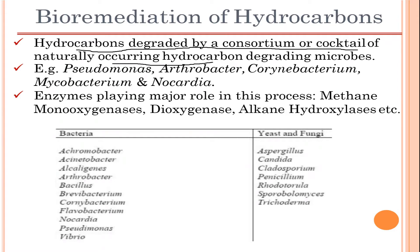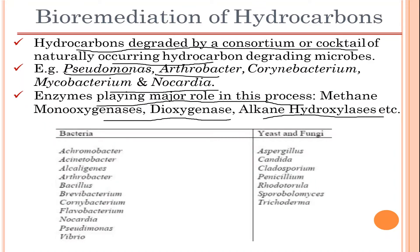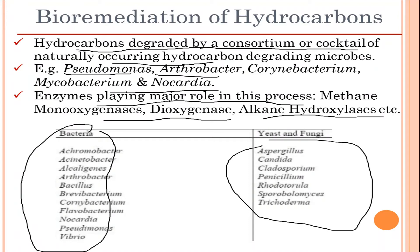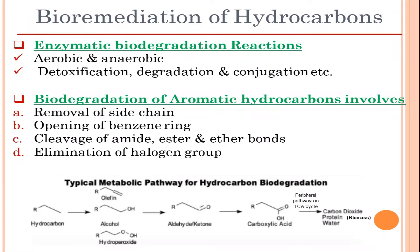Examples of hydrocarbon-degrading microbes include Pseudomonas, Arthrobacter, Corynebacterium, Mycobacterium, and Nocardia. Enzymes playing a major role in this process include methane monooxygenases, dioxygenase, and alkane hydroxylases. As you can see on screen, these are important bacteria — along with yeast and fungi — that help in the bioremediation of hydrocarbons.